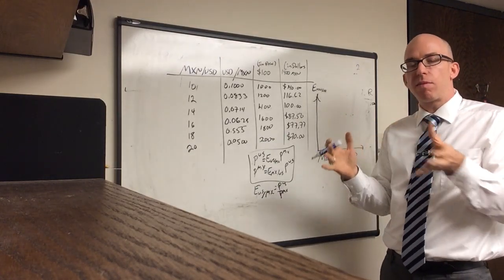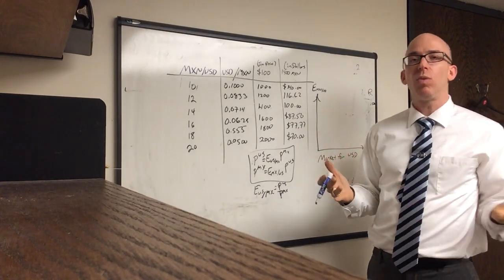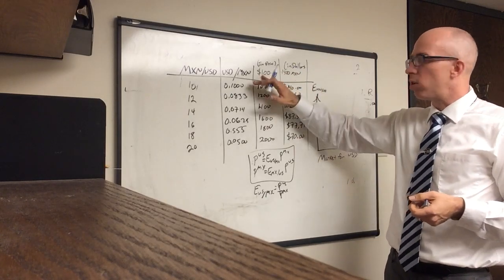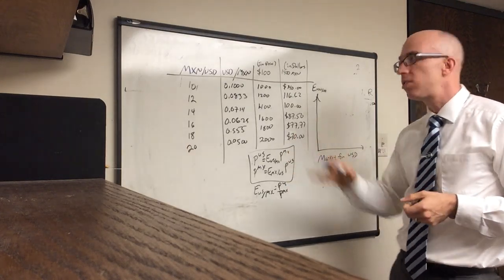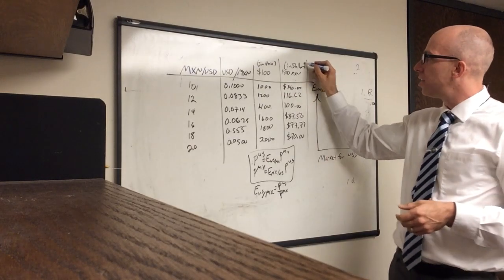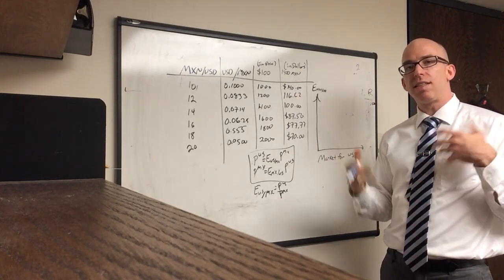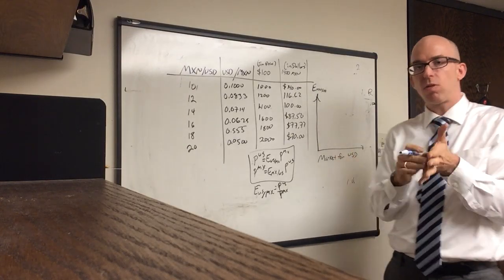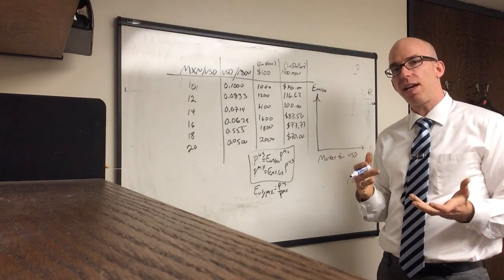How many dollars they get for their peso deposit depends on the exchange rate determined by market forces. They could take a set number of pesos but get a different amount of dollars. Or you could ask: how many pesos do I need, given different exchange rates, in order to reach a hundred dollars? The exchange rate determines how expensive it is to get a hundred dollars. From the peso point of view, to get 1,400 Mexican pesos it takes a different amount of dollars depending on the exchange rate.